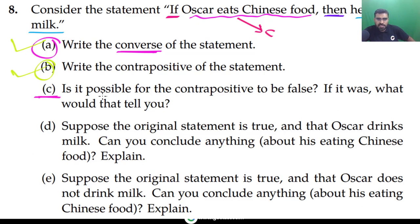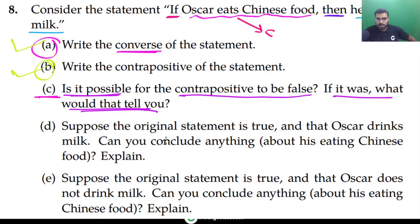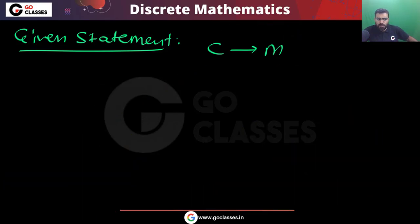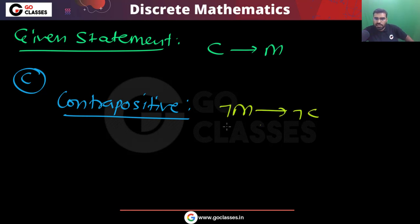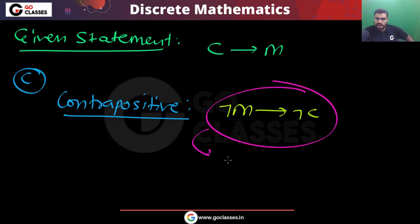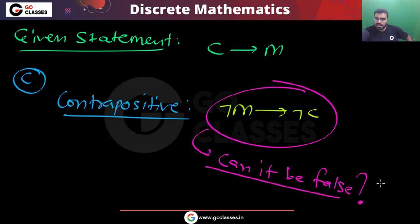In part c, we are asking: is it possible for the contrapositive to be false? The answer is yes, it is possible. The contrapositive is negation m implies negation c, and like any implication, it can be false.